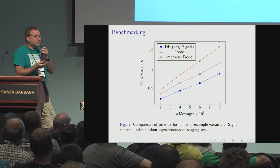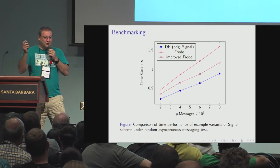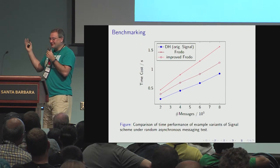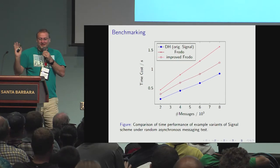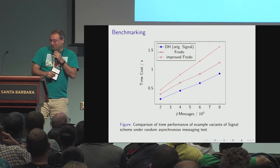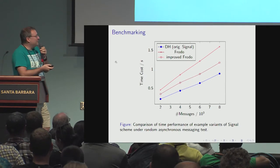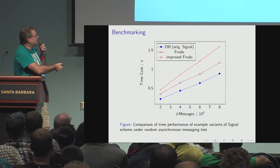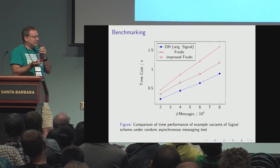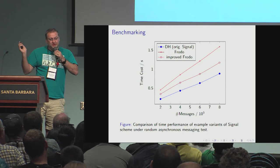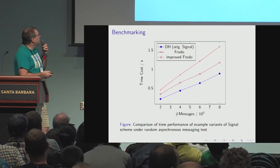This slide shows what the world has come to — it's actually the first time I have a plot on stage in a talk, so it's a historic moment. Even with the basic Frodo implementation: this is standard Signal, this is optimized Frodo, and this is Frodo. In terms of efficiency, it's a factor of two to three, which is significant but not outrageous. So if you care about post-quantum security, it's actually really simple, and this is like the first such implementation.